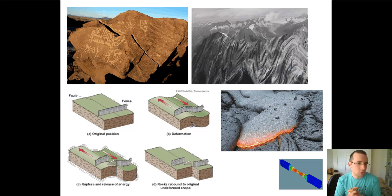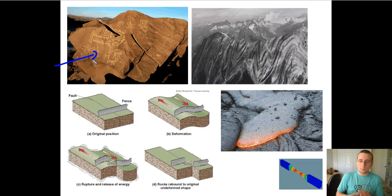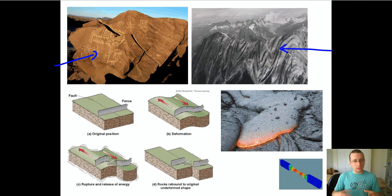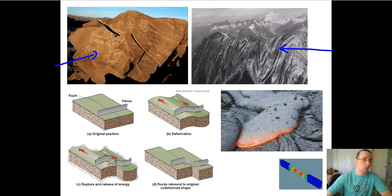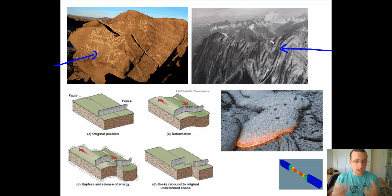Brittle materials are materials which will tend to crack under pressure or stress, like this rock in the top left — it cracked under pressure and initially formed faults. Rocks which are more plastic-like or more ductile — they have a higher plasticity — will actually fold instead of cracking. You can see how this rock here actually folded because of the stress. So ductile strain is called folding; brittle strain is called faulting. Different materials are going to be more likely to either break or fold, depending on certain situations.